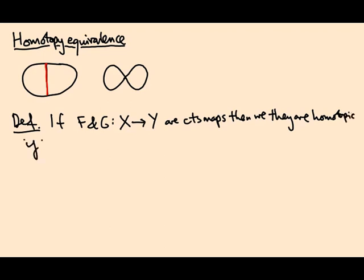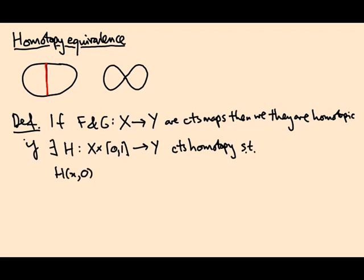if, thinking back to the definition of homotopy, there exists a homotopy H which is now going to be defined on X cross the interval, in other words we're introducing an extra variable, taking values in Y. This is a continuous map called a homotopy such that H(x,0) = F(x) for all x and H(x,1) = G(x) for all x.